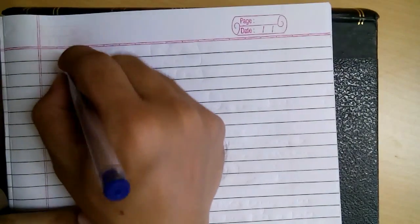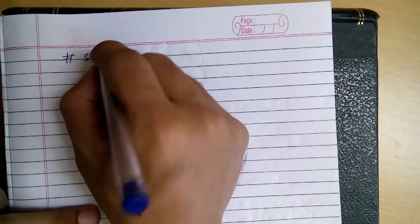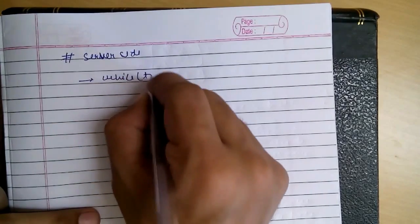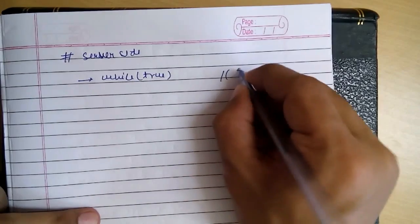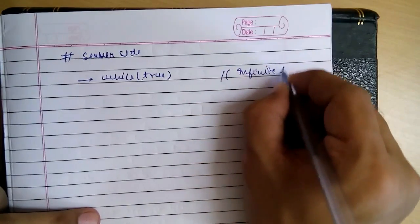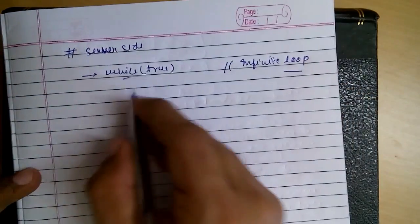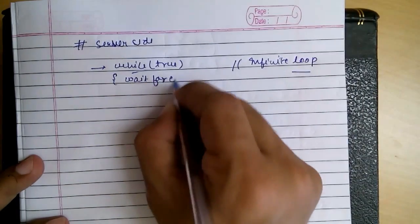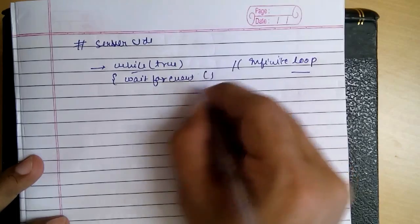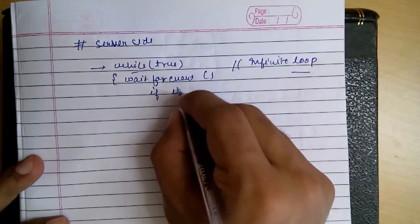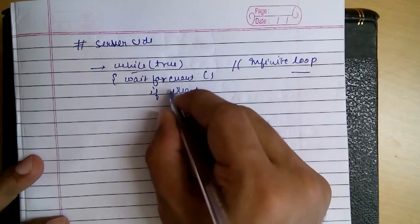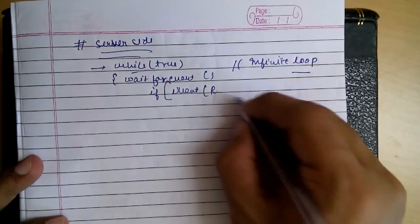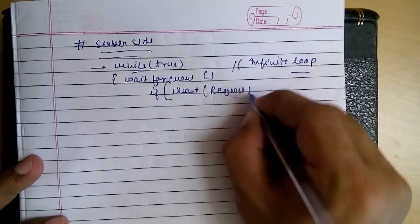So the algorithm on the server side is while true. As I was saying this, this is the infinite loop I am going to put. And it continuously checks, it waits for event. If event occurred, what was the event on server side? It will be the request to send frame from the network layer.